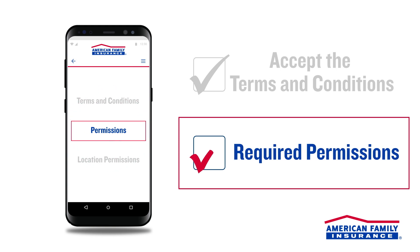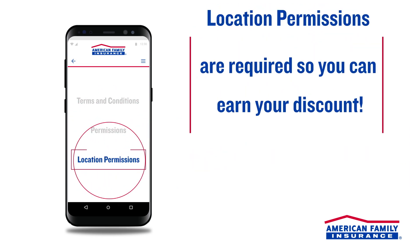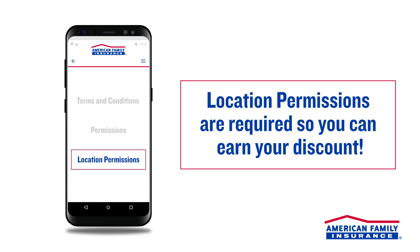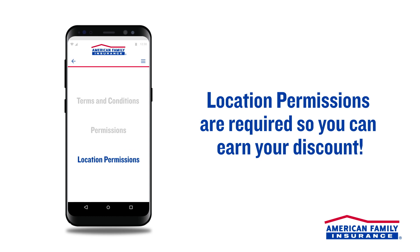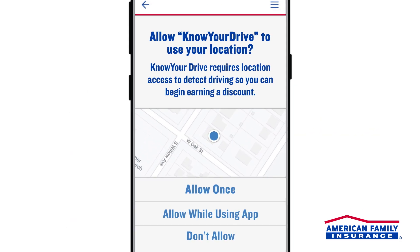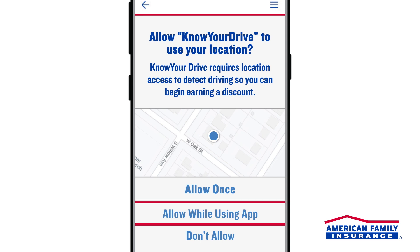Next, it's time to set up permissions. First, the app needs permission to access your location so it can understand when you're driving, how far you drive, and when you practice the driving behaviors that help you earn a bigger discount, like driving the speed limit and avoiding hard braking. You'll be asked for permission to access the device's location while using the app. You may need to tap this option twice.